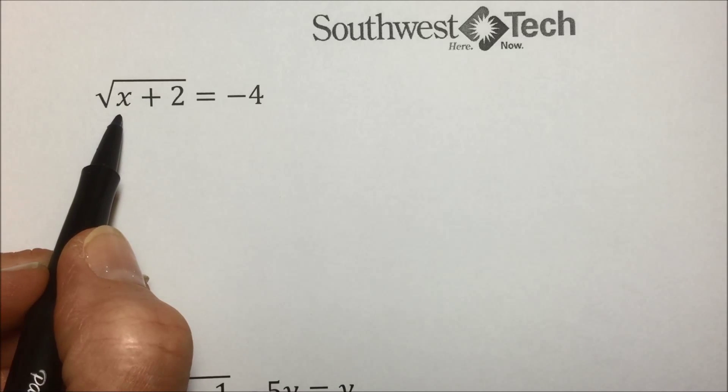In this next example, they're asking us to solve this radical equation, and right off the bat we have a problem. When you take the square root, or an even index, we always are looking for a non-negative solution, and they're asking us, could this be equal to a negative 4? Because it's a negative, there is no solution that would be possible to the square root. Had it been a cube or a fifth, some odd index, we would be able to do something and come up with a possible solution.